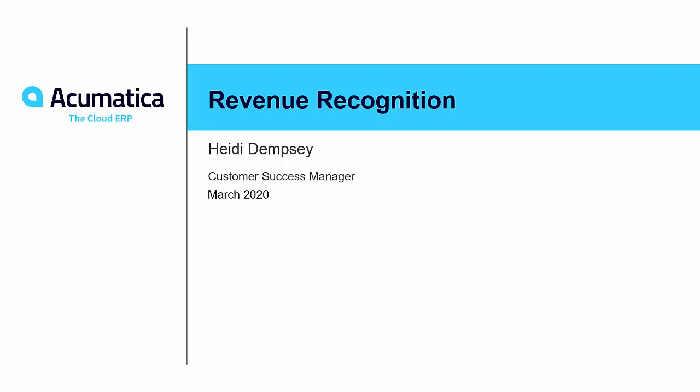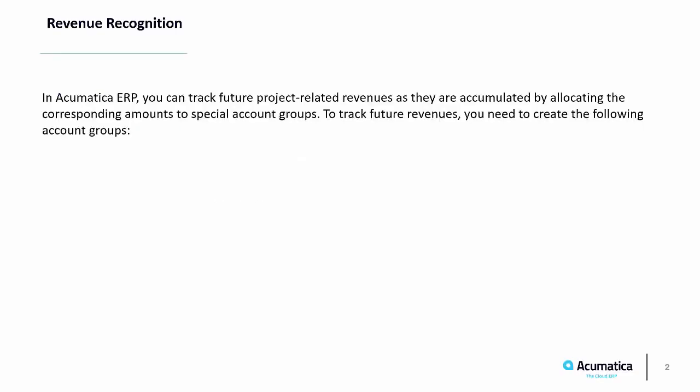This video will cover how to set up allocation rules to recognize revenue before it is actually earned. You may want to view future revenues as they are accumulated during the life of the project, regardless of when they will actually be recognized. For instance, the project may be billed monthly, but you may need to track the amount you will bill to the customer weekly or even daily. In Acumatica ERP, you can track future project-related revenues as they are accumulated by allocating the corresponding amounts to special account groups.